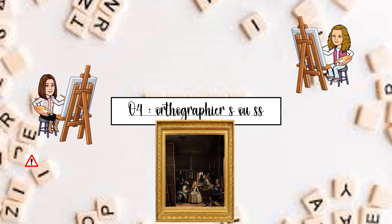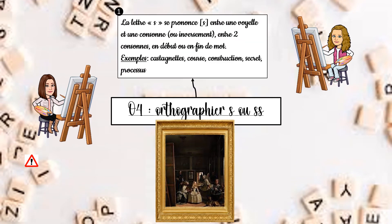À présent, faisons le bilan de la notion d'aujourd'hui. Premièrement, la lettre S se prononce S entre une voyelle et une consonne ou inversement, entre deux consonnes, en début ou en fin de mot. Exemples : castagnette, course, construction, secrets, processus.